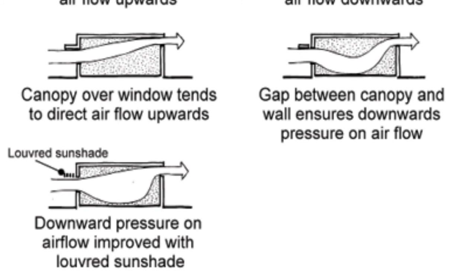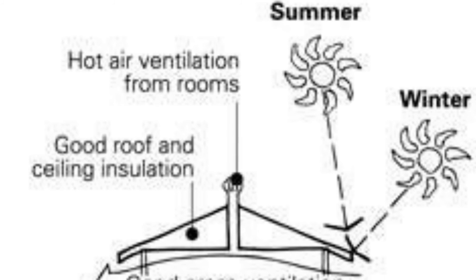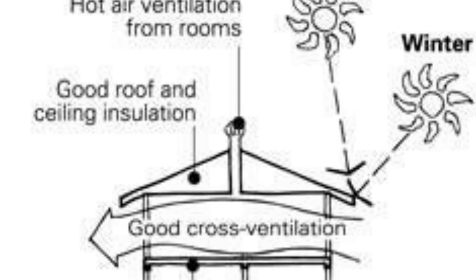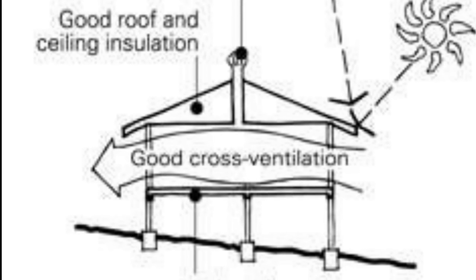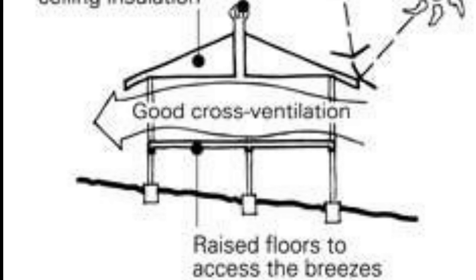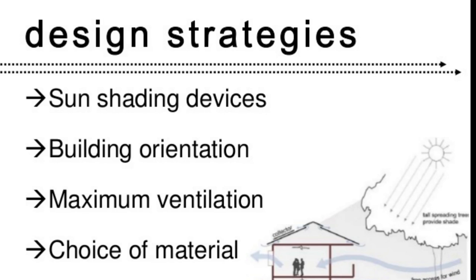Having good cross ventilation is vital for any house. In some situations, such as in tropical environments, we want to elevate the building — we want that air movement constantly going through it. There are various strategies you can take advantage of: shading devices, orientation, and choices of materials. These are design strategies for passive cooling and passive design. See you guys next time.